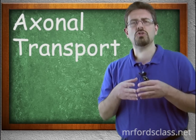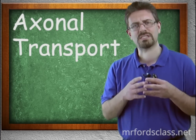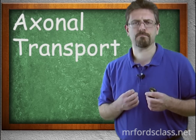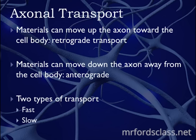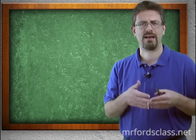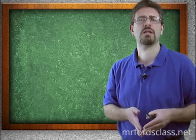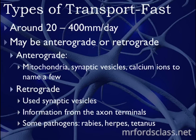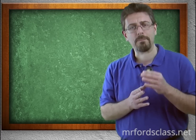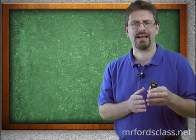Then we have axonal transport — the movement of substances along the axon. We can have either fast or slow transport. Materials can move down the axon away from the cell body, which is called antegrade, or they can move the other way. All materials move along something called microtubules. Fast transport moves around 20 to 400 millimeters per day and can be either antegrade or retrograde, meaning it can move either up or down the axon.